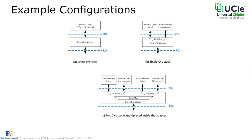Looking at example configurations: in the simplest case, a single protocol layer — either PCIe or streaming — talks to a die-to-die adapter. With the remote link partner, it trains up in whichever mode it supports. For CXL, you can have a single CXL stack with two protocol layers — one for CXL.IO and one for CXL.cacheMem — where the adapter takes over ArbMux functionality, FLIT CRC, and retry functionality.